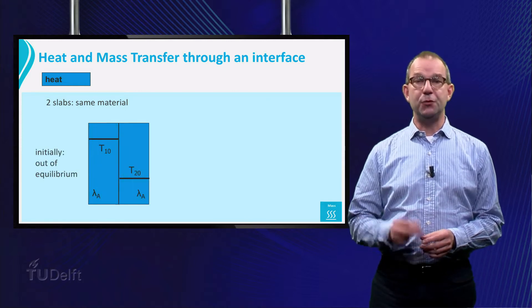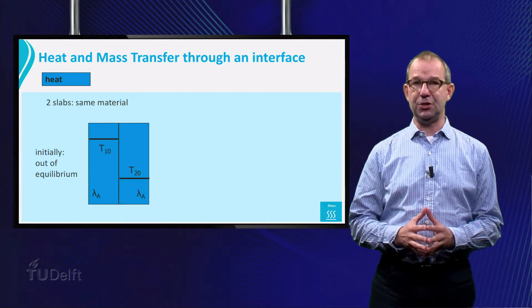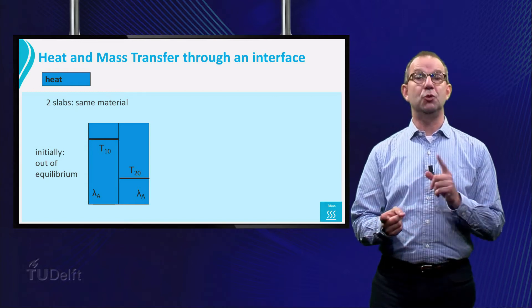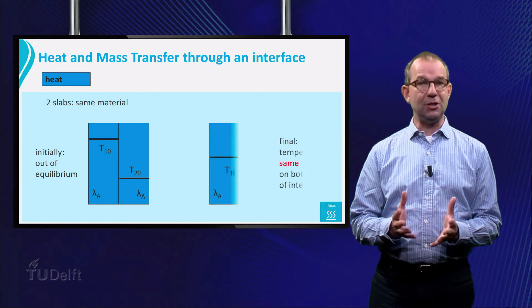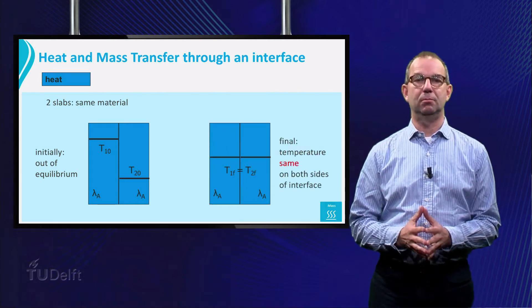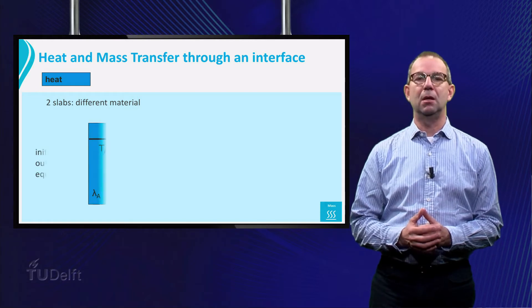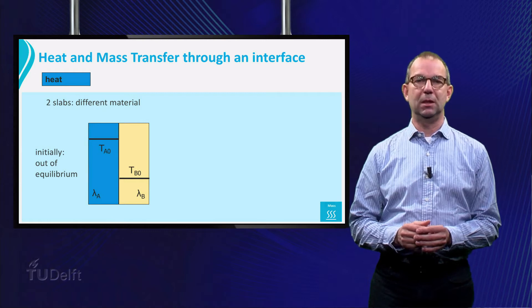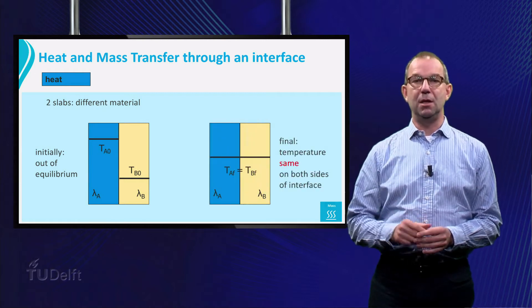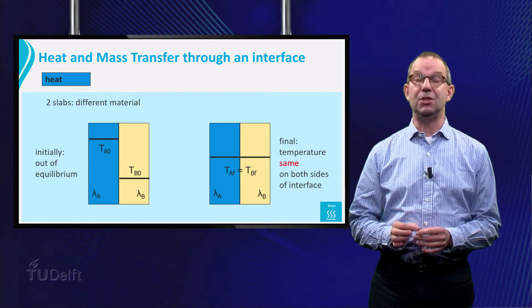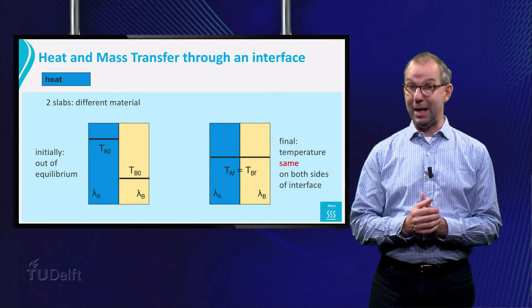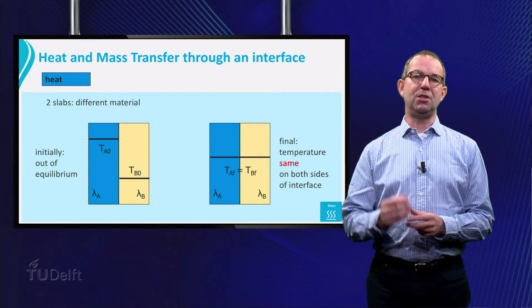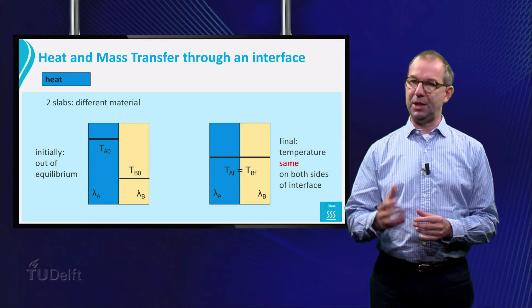As discussed, if two slabs of different temperature are brought into contact, heat will flow from the hot to cold side. Eventually they will have the same temperature. But what if the slabs are made of different material? That doesn't matter. The temperature will still be the same in both slabs in the end. This observation is so important that it forms the basis of one of the fundamental laws of thermodynamics.